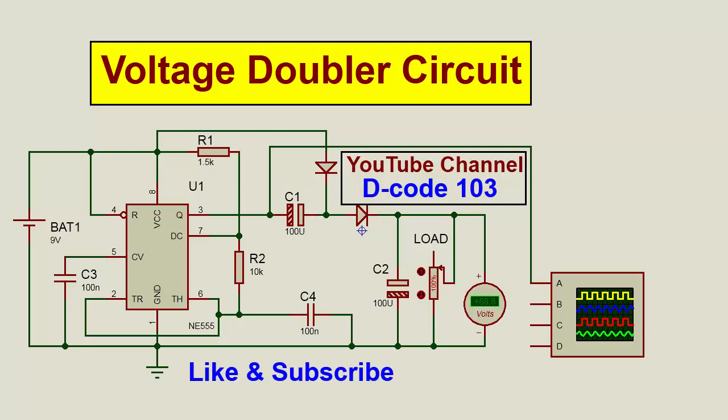Welcome to my channel D-code 103. Today I will show you a circuit using 555 timer. This circuit doubles the input voltage. The output voltage is around two times the input voltage.